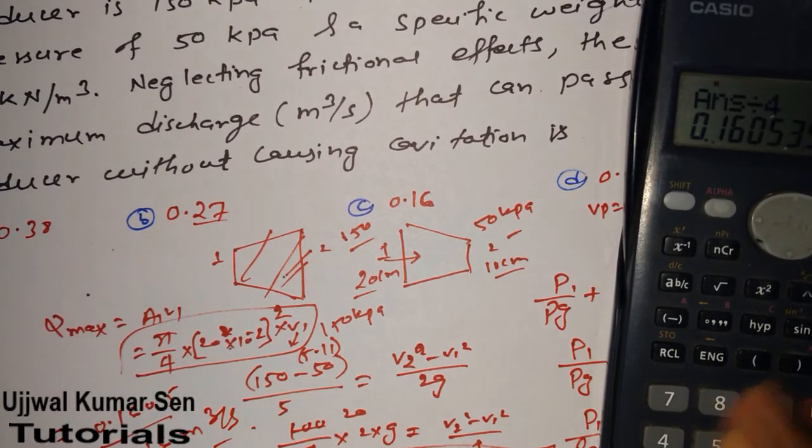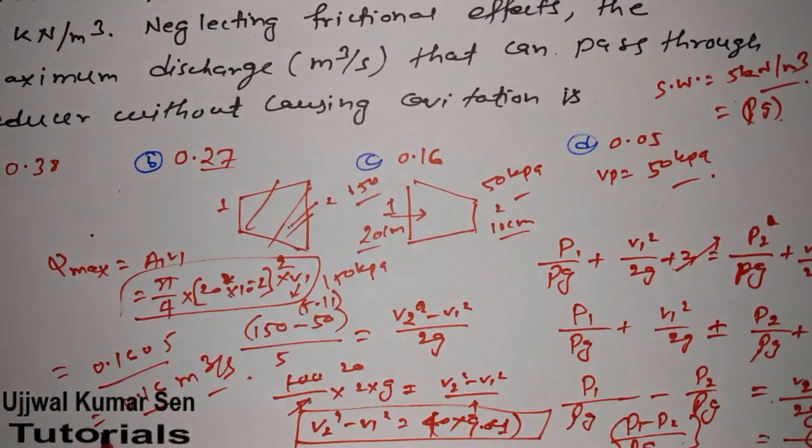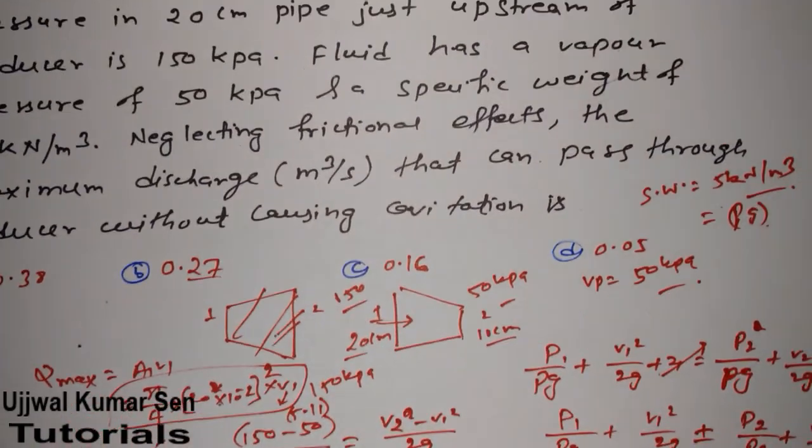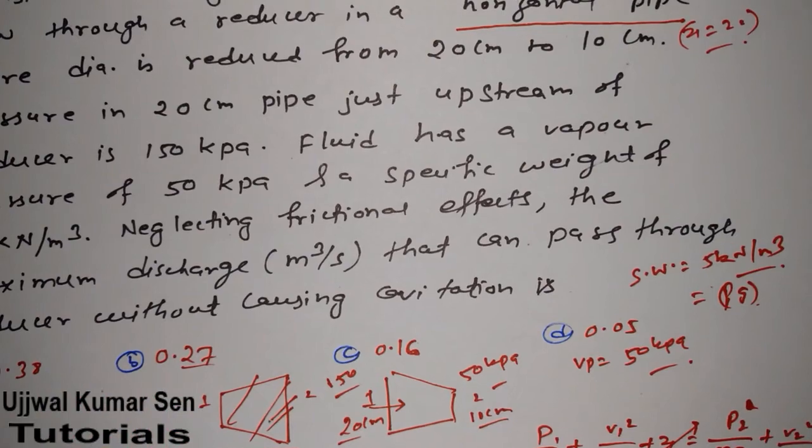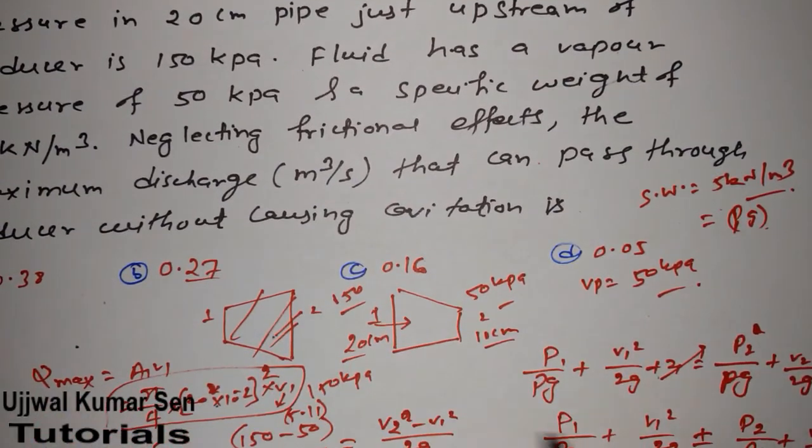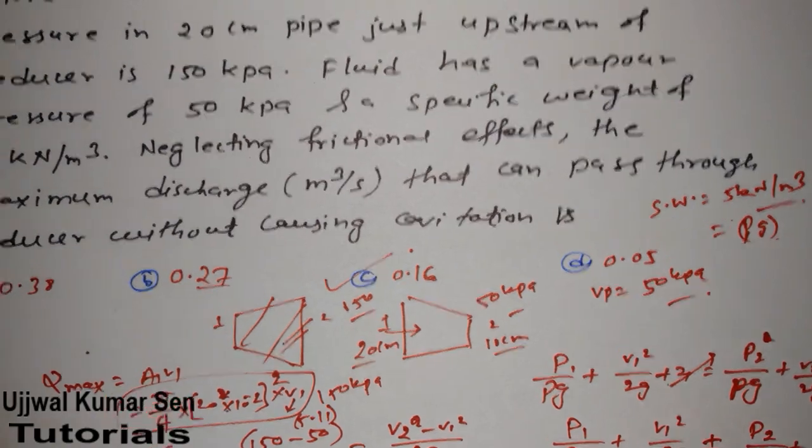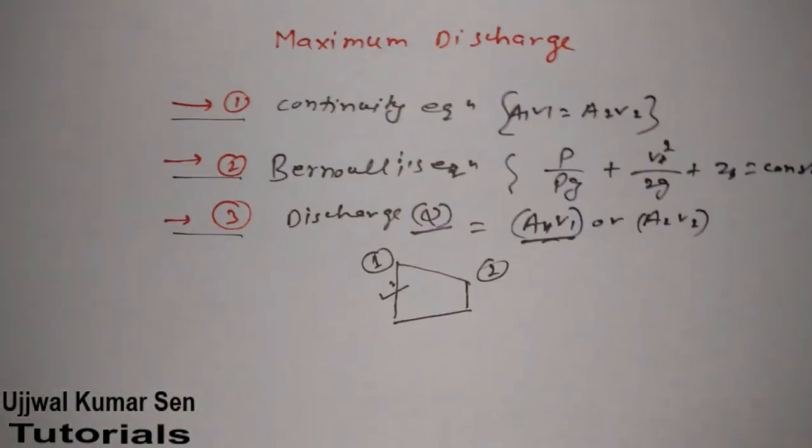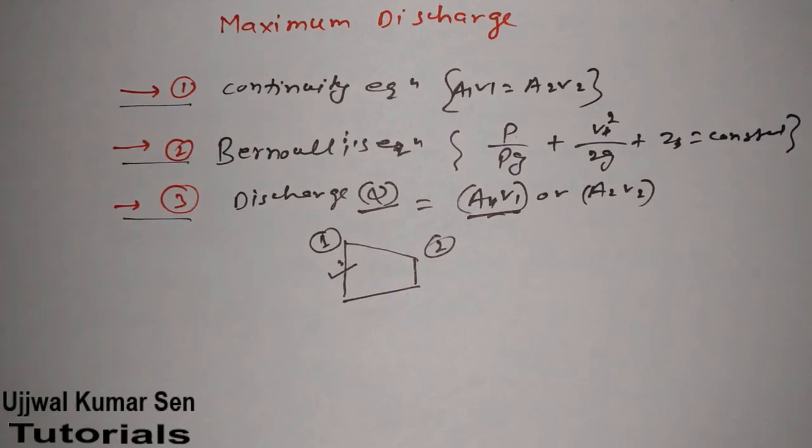Check the unit—we got the answer as 0.16 m³/s. Looking at the options: 0.38, 0.27, 0.16. So option third is the right answer according to our calculation. I hope you understand how we implemented these three formulas to find out maximum discharge.